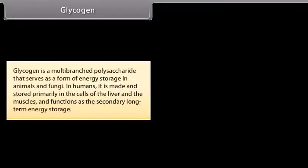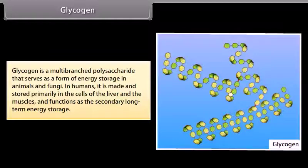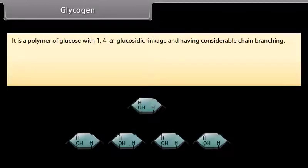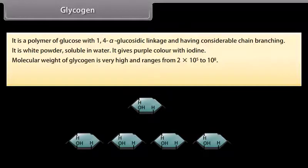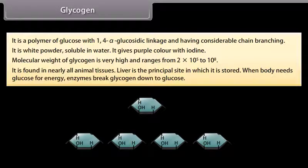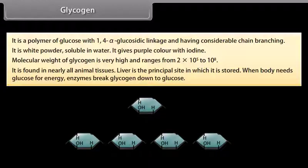Glycogen is a multi-branched polysaccharide that serves as a form of energy storage in animals and fungi. In humans, it is made and stored primarily in the cells of the liver and muscles and functions as the secondary long-term energy storage. It is a polymer of glucose with 1,4-alpha-glucosidic linkage and considerable chain branching. It is a white powder, soluble in water, gives a purple color with iodine, and has a very high molecular weight (2×10⁵ to 10⁸). When the body needs glucose for energy, enzymes break glycogen down to glucose.